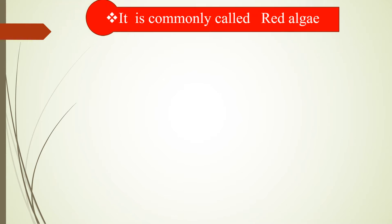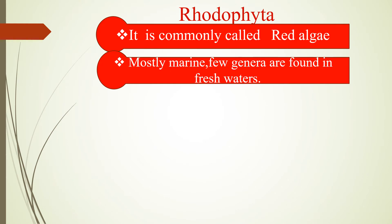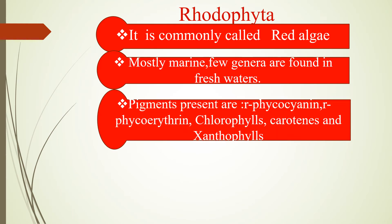Now let us see what Rhodophyta are. It is commonly called red algae, mostly marine, and few genera are found in fresh waters. The pigments present are chlorophylls, R-phycocyanin, R-phycoerythrin, carotenoids and xanthophylls. Note that it is R-phycocyanin and R-phycoerythrin, whereas in Cyanophyta you find C-phycocyanin and C-phycoerythrin.